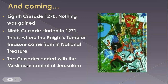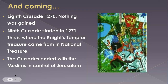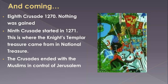When all was said and done, the Crusades ended with Muslims still in control of Jerusalem — Christians did not have any control. Fast-forwarding to the 1950s, people of the Muslim faith and people of the Jewish faith began butting heads over control of this same area, largely rooted in this history.